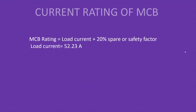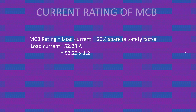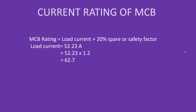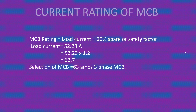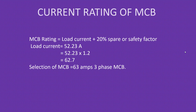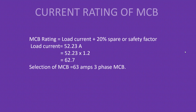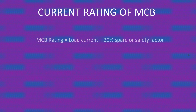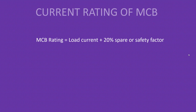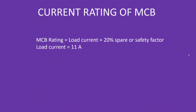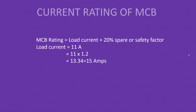For our three-phase load current of 52.23 amps, the MCB rating will be 52.23 × 1.2 = 62.7 amps. Looking at the MCB chart, we select the next available rating, which is 63 amps — because no manufacturer makes a 62.7-amp MCB. So our selection is a 63-amp three-phase MCB. For the single-phase scenario, the load current is approximately 11 amps, so 11 × 1.2 = 13.34. The next available rating is 15 amps, making our selection a 15-amp single-phase MCB.